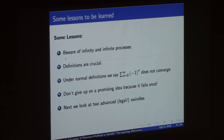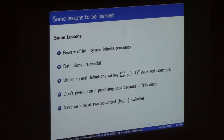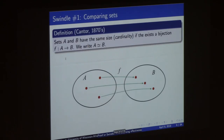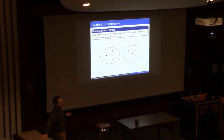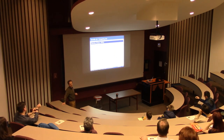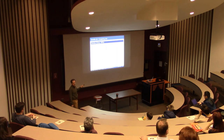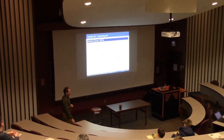Now I'd like to look at a couple more advanced swindles that turn out to be true. The first one involves just cardinality of sets, or comparing the sizes of sets. There's a very important definition — a real breakthrough by Cantor — which says sets have the same size if there is a bijective function from one to the other. On the left I have set A, on the right set B, and having a function that's both one-to-one and onto between them is the definition of what it means for those sets to have the same size.